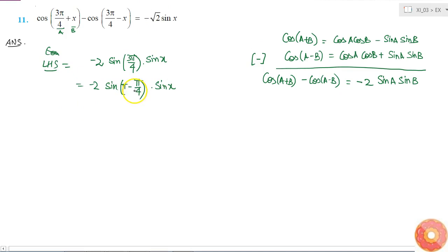I know sin(π - θ) is equal to sin θ. It will be plus only and it will be sin θ. So this is minus 2 sin(π/4) into sin x.